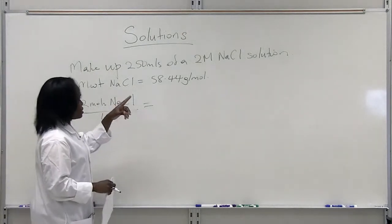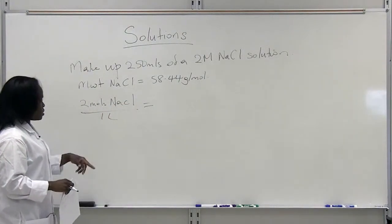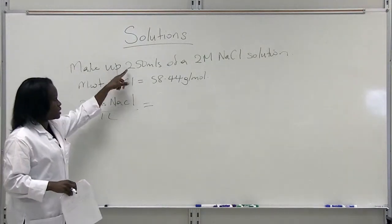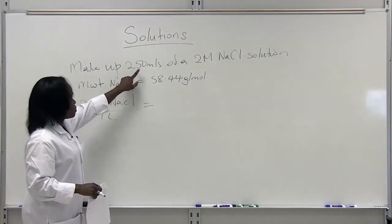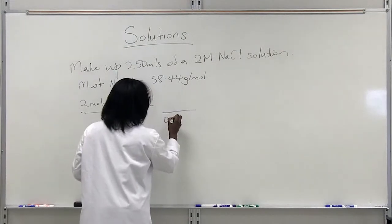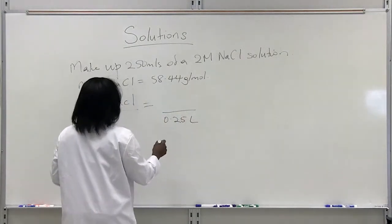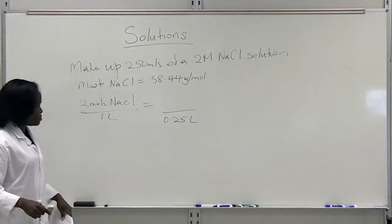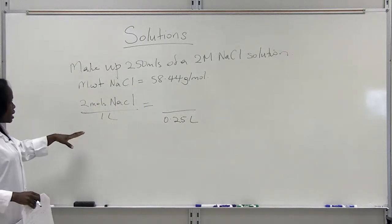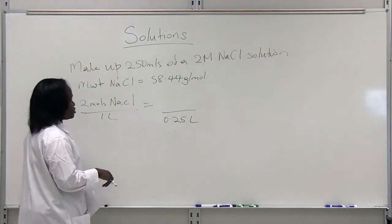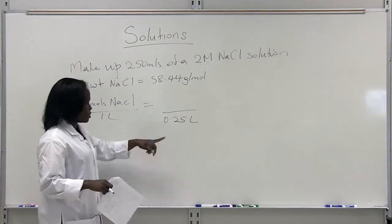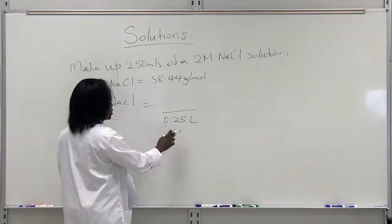Because molarity represents moles per liter of solution, whatever volume we are using with regards to molarity has to be in liters. So we need to convert our 250 mL to liters — that would be 0.25 liters. We know that 2 moles of sodium chloride are present in 1 liter of the solution we want to make. How much would be present in 250 mL? Because we are not making 1 liter, we want to make 0.25 liters of solution.